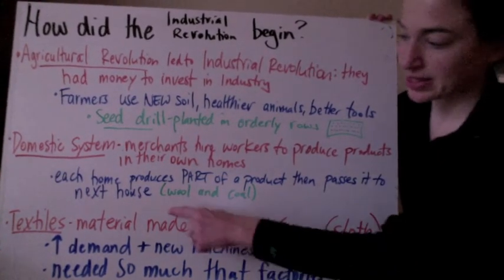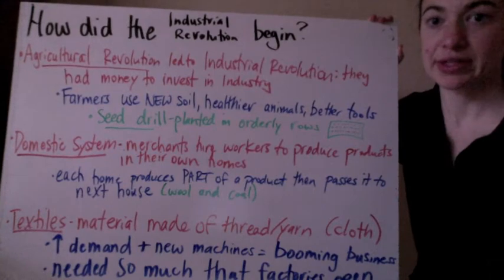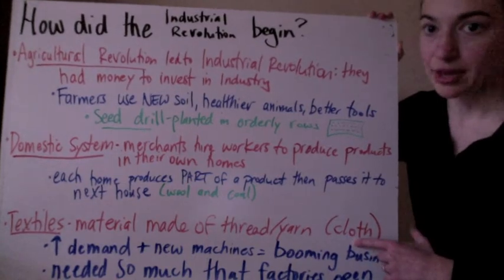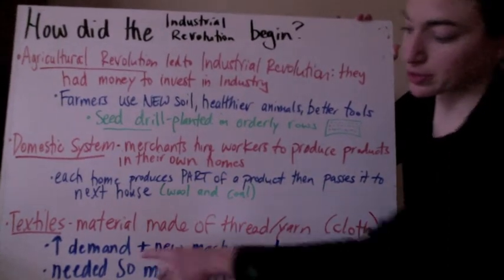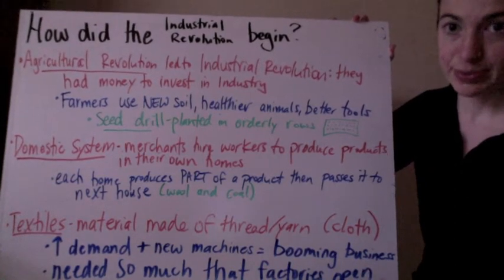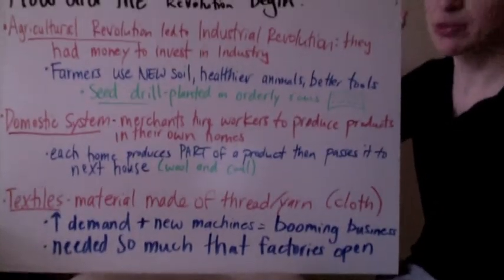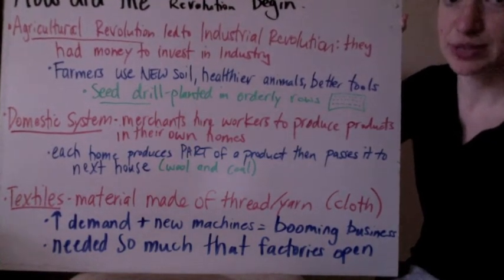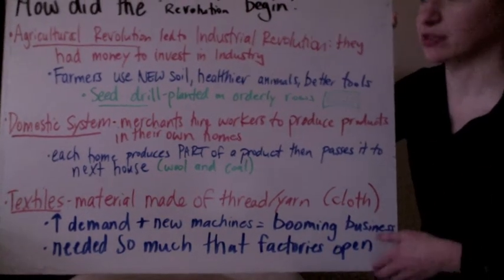Finally, textiles became really popular. You may not know what the word means, but you're probably wearing a textile right now — it's material made of thread or yarn, basically cloth. There was an increase in demand and new materials, which equaled a booming business. More people wanted it and there were better machines to make it, so they made a lot of money. They needed so much that they couldn't just make textiles in houses anymore — they had to make them in mass quantities, and so factories began to open.